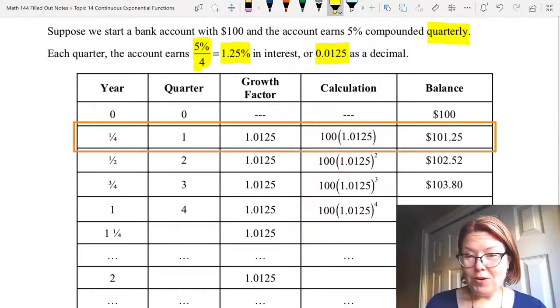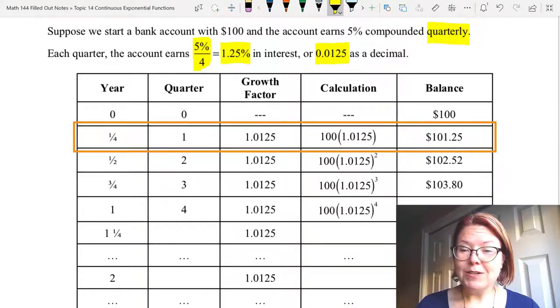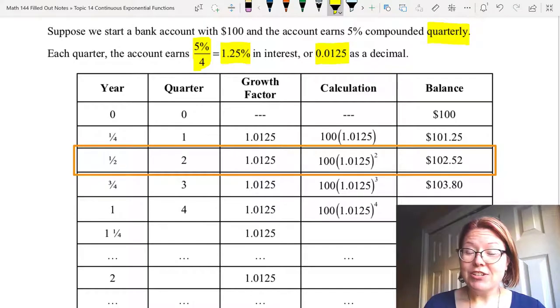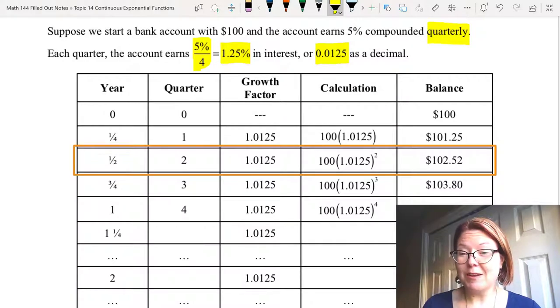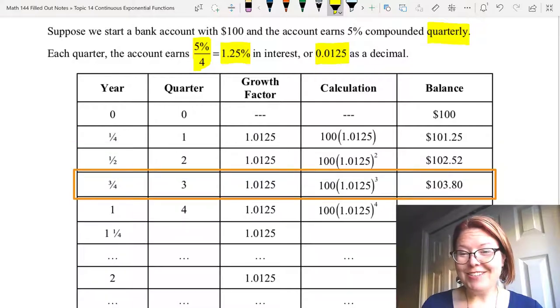For the first quarter, the calculation will be 100 times 1.0125 for a balance of $101.25. In quarter two, the calculation is $100 times (1.0125) to the second power. The balance is $102.52. For quarter three, the calculation is 100 times 1.0125 to the third power. The balance is $103.80.